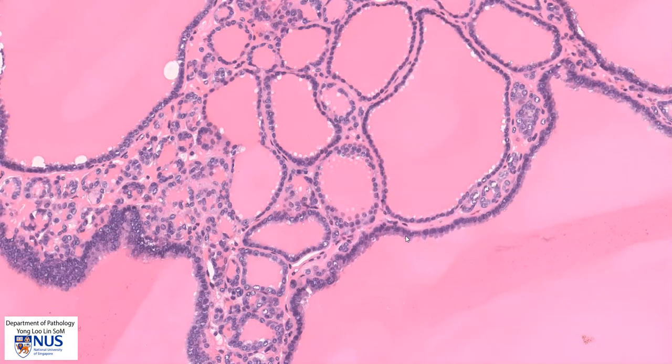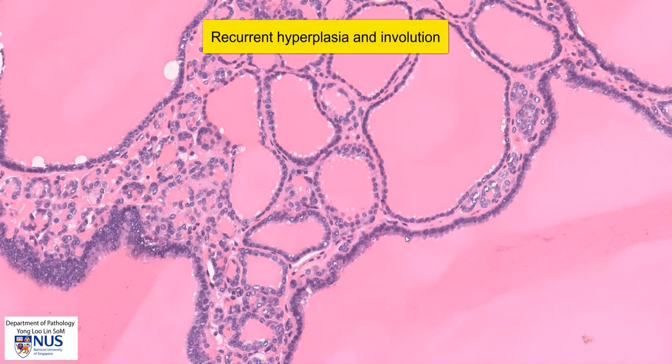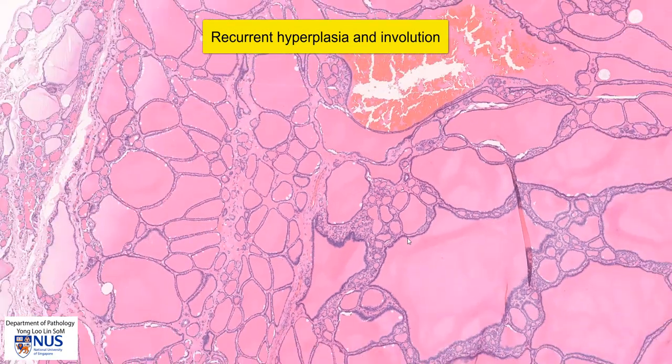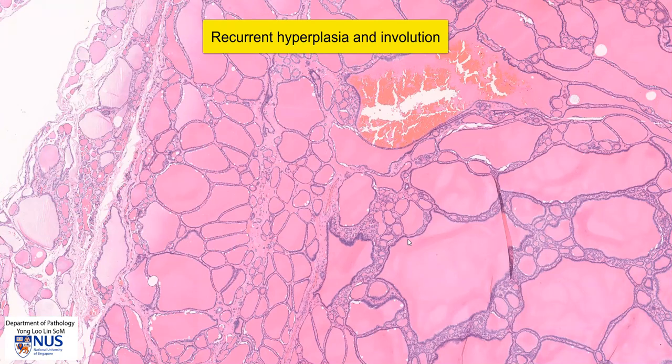Nodular goiter usually occurs because of recurrent hyperplasia and involution. This is uneven throughout the thyroid gland, hence causing a nodular appearance.